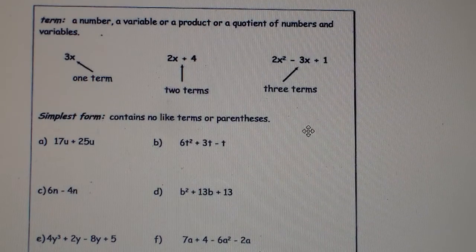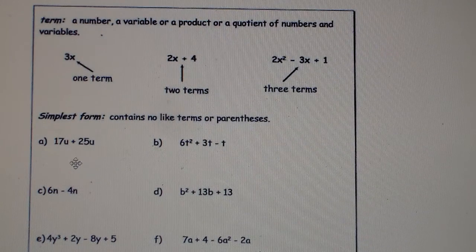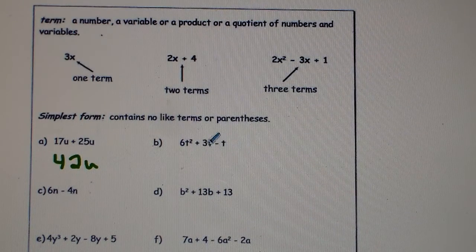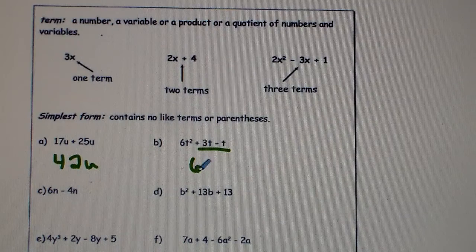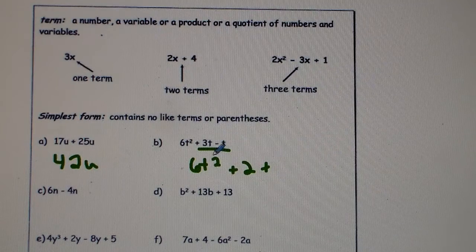The simplest form contains no like terms or parentheses. In example A, we combine our like terms: 17u + 25u gives us 42u. In example B, 6t² + 3t − t: we combine 3t minus 1t to get 2t, giving us 6t² + 2t. Remember, t² is different from t, so those two can't be combined.